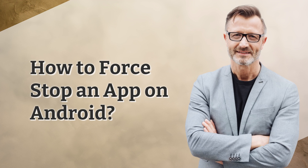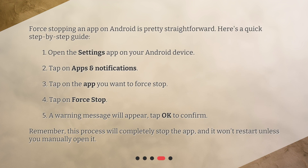How to force stop an app on Android? Force stopping an app on Android is pretty straightforward. Here's a quick step-by-step guide. First, open the Settings app on your Android device. Second, tap on Apps and Notifications. Third, tap on the app you want to force stop. Fourth, tap on Force Stop. Fifth, a warning message will appear — tap OK to confirm.